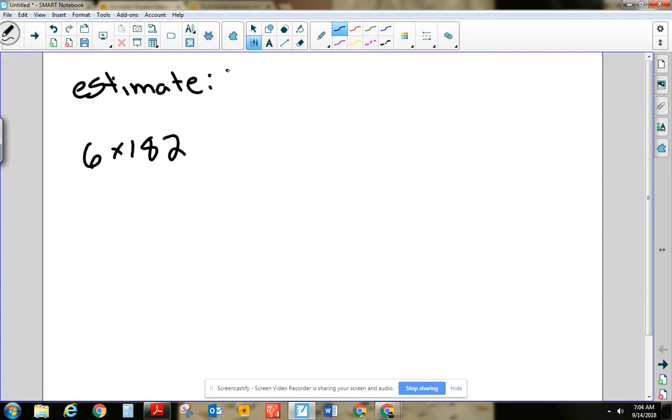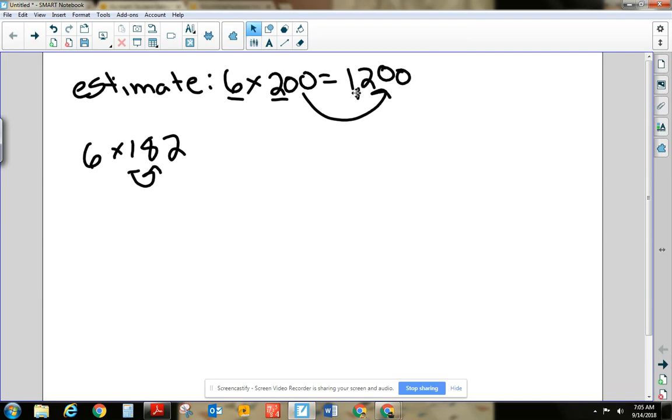So it's going to be 6 times, we're going to estimate this 182. And I know that it's closer to 200 than 100. So 6 times 200, remember 6 times 2, is 1200. So my answer, my final part, should be about 1200 or about 1200.